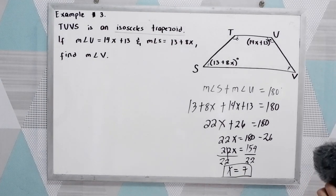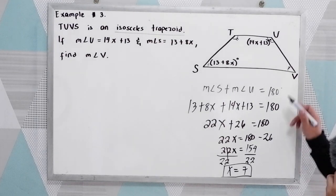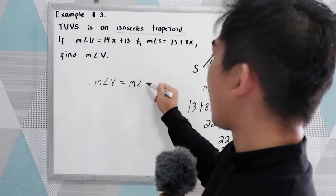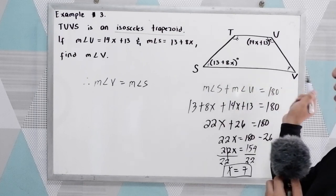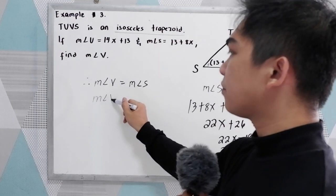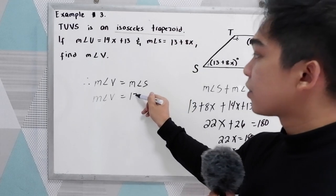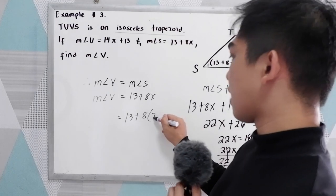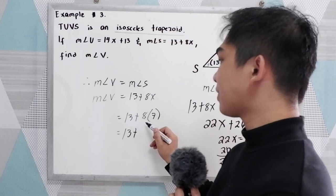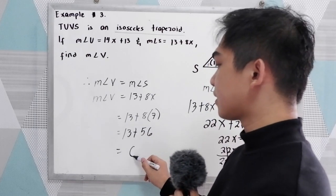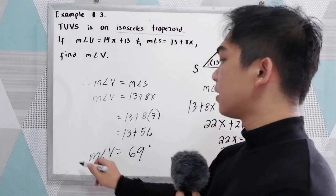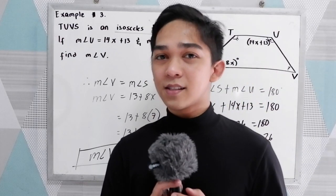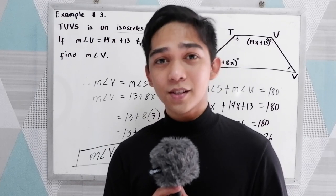We know that measure of angle V equals measure of angle S, since base angles of an isosceles trapezoid are congruent. Our angle S is 13 plus 8x. So: 13 plus 8 times 7, which is 13 plus 56, equals 69 degrees. Therefore, measure of angle V is equal to 69 degrees. That is the trapezoid and its properties. Thank you for watching Senior Pablo TV.